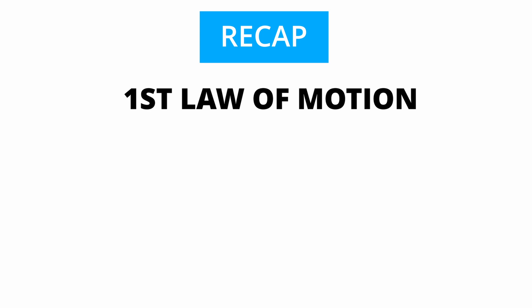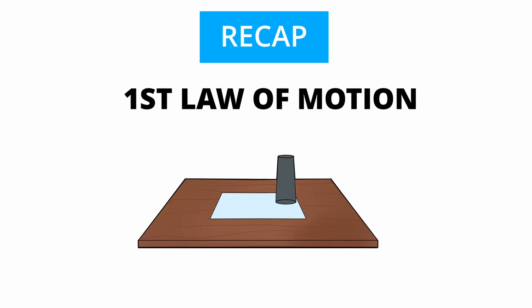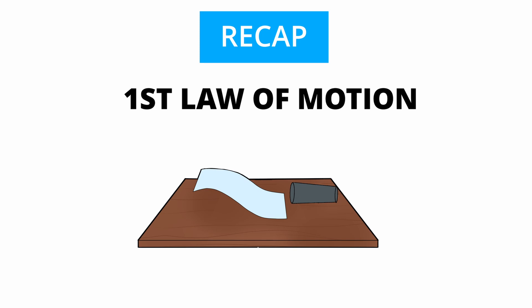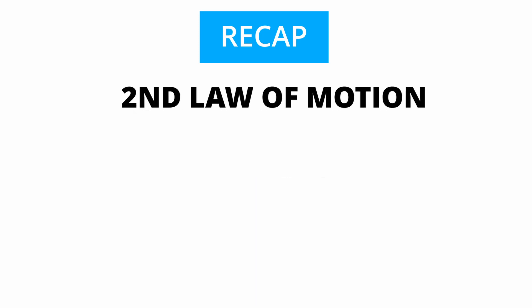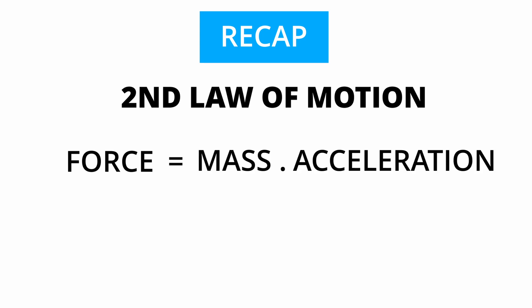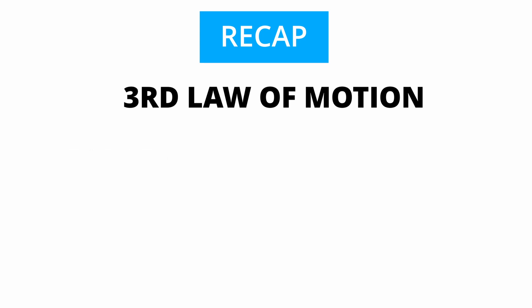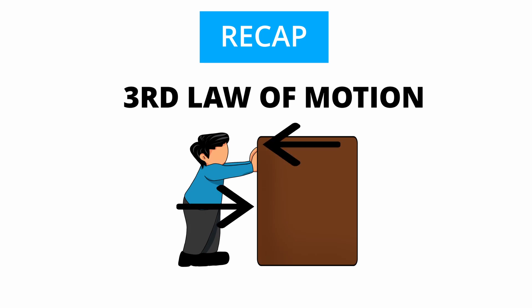To recap, Newton has three laws of motion that describe the world around us. The first law of motion states that all objects are in a state of inertia until a force is acted upon it. The second law of motion states that force is equal to mass times acceleration. The third law of motion states that all forces have an equal and opposite reaction.